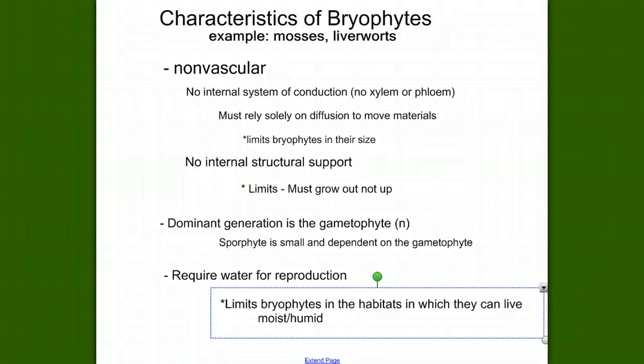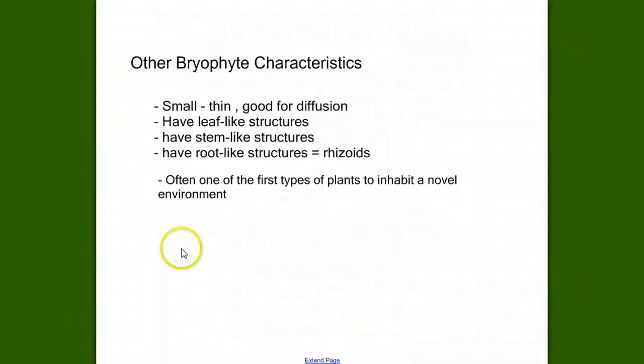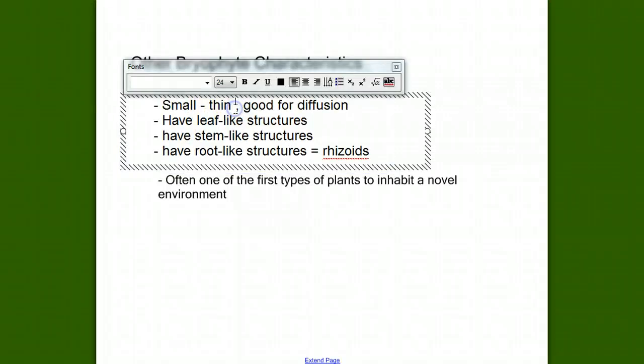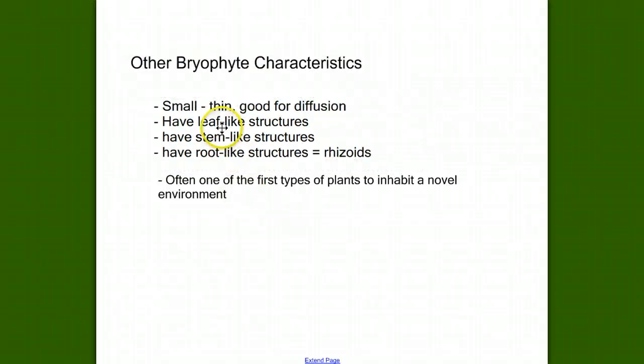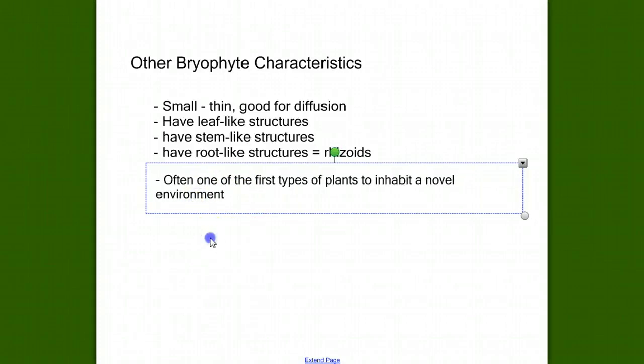Now we have a few more small characteristics that we can talk about for bryophytes. Bryophytes are small and thin, which makes them good for relying on diffusion. They have leaf-like structures but no true leaves. They have stem-like structures but no true stems. And they have root-like structures called rhizoids for absorbing moisture from the soil. Another characteristic is that mosses will often be the first type of plants to inhabit a novel environment.